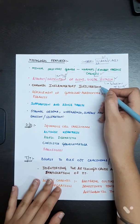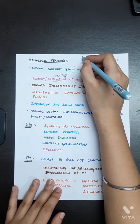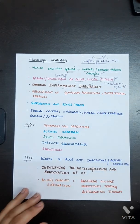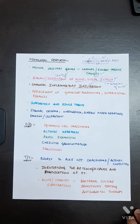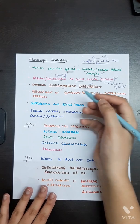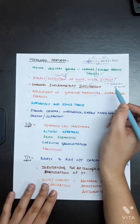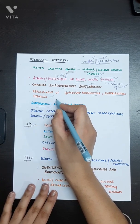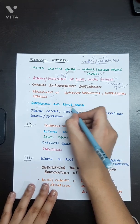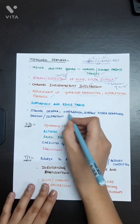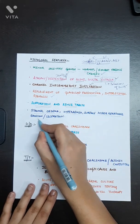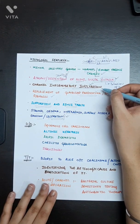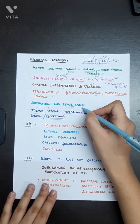Since cheilitis represents inflammation of the lips, inflammatory infiltration with many inflammatory cells will be present. Replacement of glandular parenchyma and interstitial fibrosis can occur. Suppuration and abscess formation will be seen in histological slides, along with sinus tracts, stromal edema, hyperemia, surface hyperkeratosis, erosion, and ulcerations.